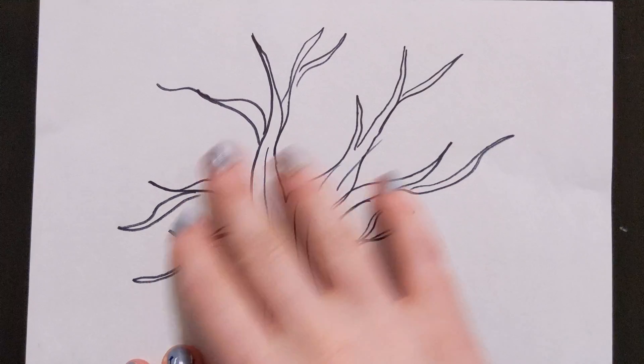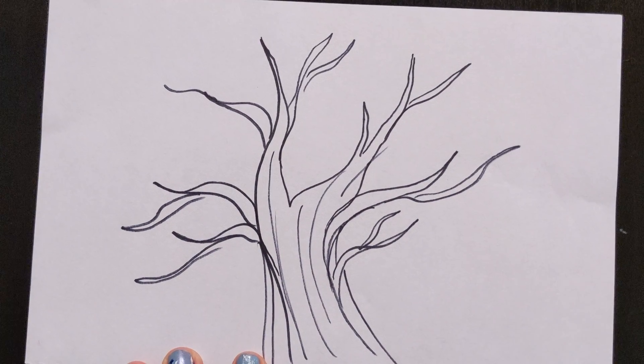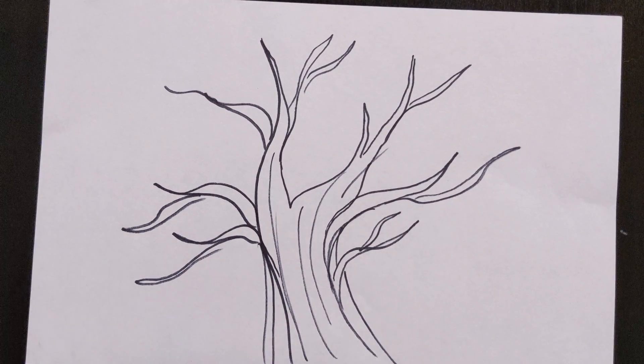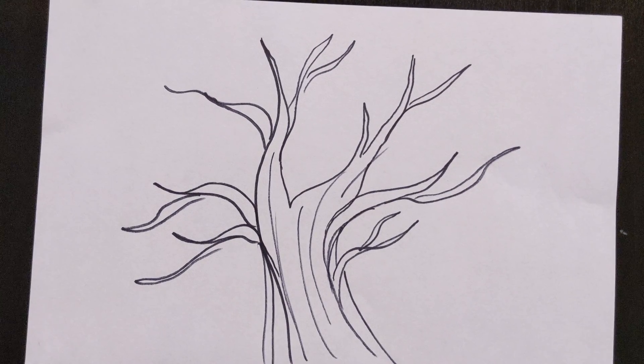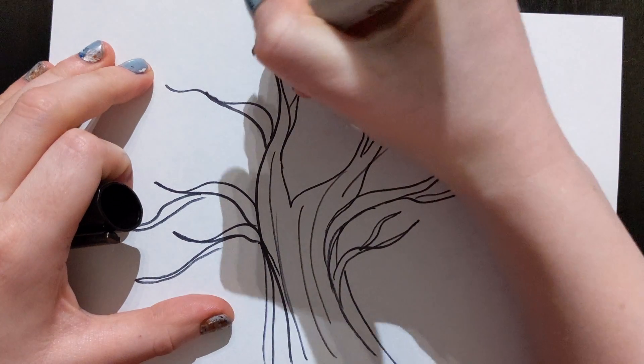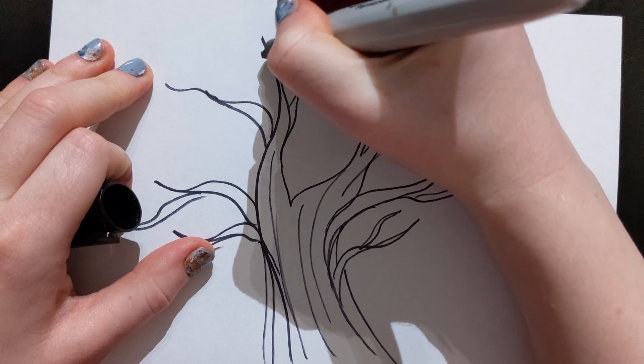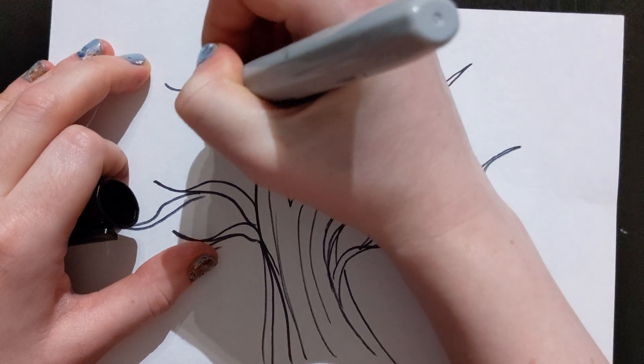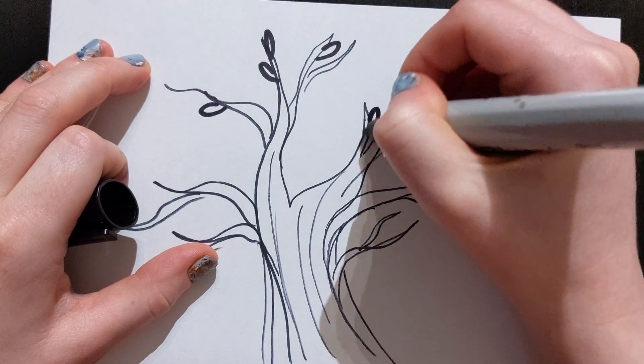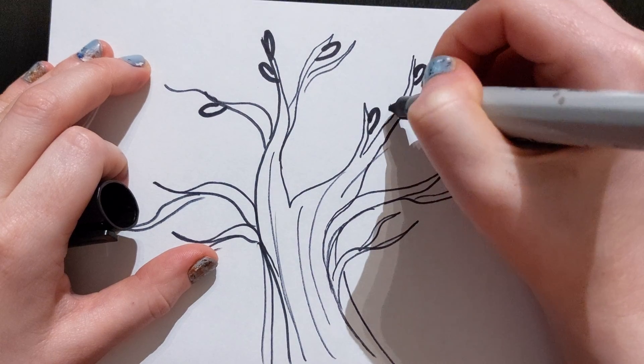For your fall tree, you just start off the same way as if you drew your winter tree. But you want to add in some of your leaves. So you can just have fun with all the different leaves that you add. You can add them all over your tree.